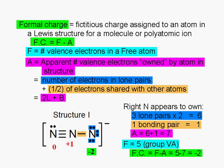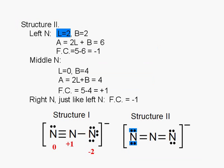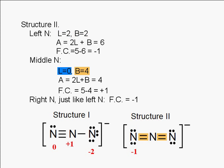What about structure 2? The nitrogen atom on the left has two lone pairs and two bonding pairs. Its formal charge is negative 1. The nitrogen atom in the middle has no lone pair and four bonding pairs. Its formal charge is plus 1. And finally, the nitrogen atom on the right is just like the nitrogen atom on the left. It has two lone pairs and two bonding pairs. So its formal charge is also negative 1.